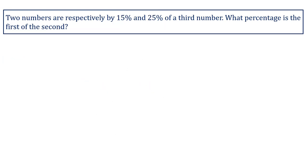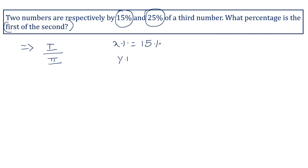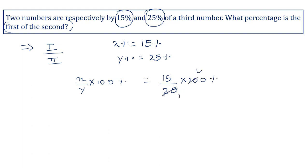Two numbers are respectively 15 percent and 25 percent of a third number. What percentage is the first of the second? The first is compared with the second, so put first in the numerator and second in the denominator. x percent equals 15 percent and y percent equals 25 percent, both being percentages of the third number. Using the formula x upon y into 100 percent: 15 upon 25 into 100 percent gives 60 percent. So 60 percent is the first of the second.